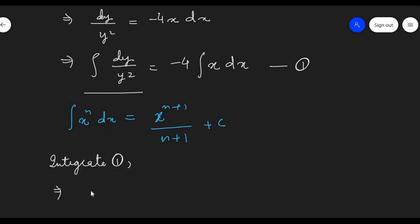We will get the integration of y^(-2) as y^(-2+1)/(-2+1). C we will write at one place equal to -4 times, on the right hand side we use the same identity, so we get x^(1+1)/(1+1) + C.